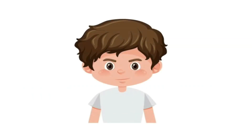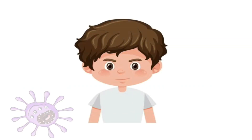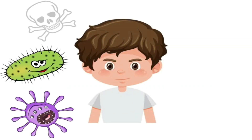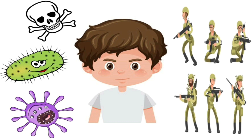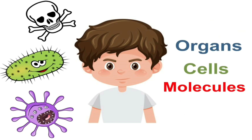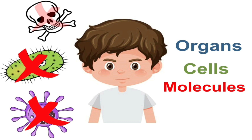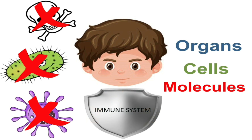Every day our body is exposed to a lot of bacteria, viruses, and toxins, but we are able to live a healthy life without any disease. This is because our body has an army. This army consists of organs, cells, and molecules that work together to protect us from these bacteria, viruses, and toxins. This army is called the immune system.